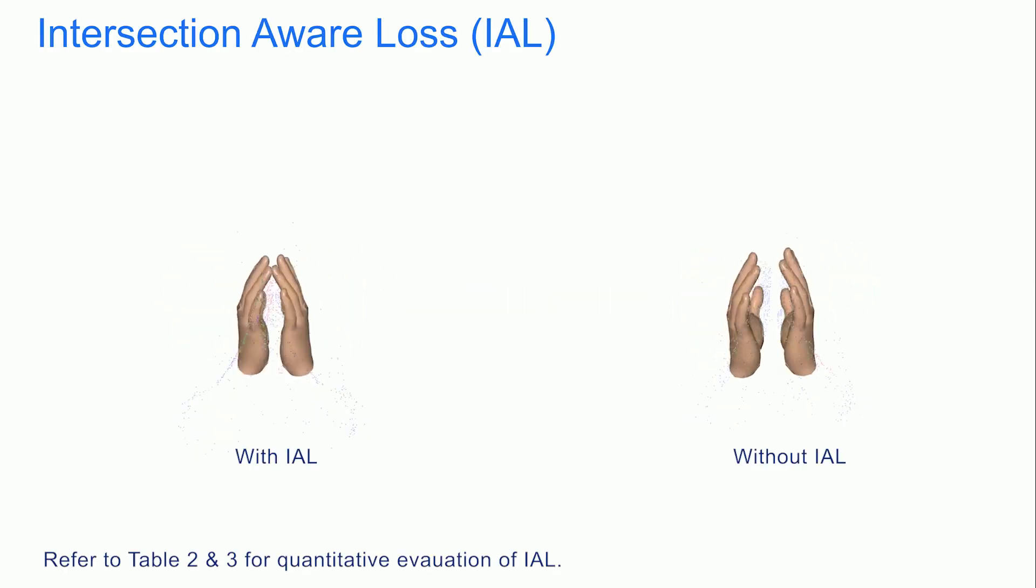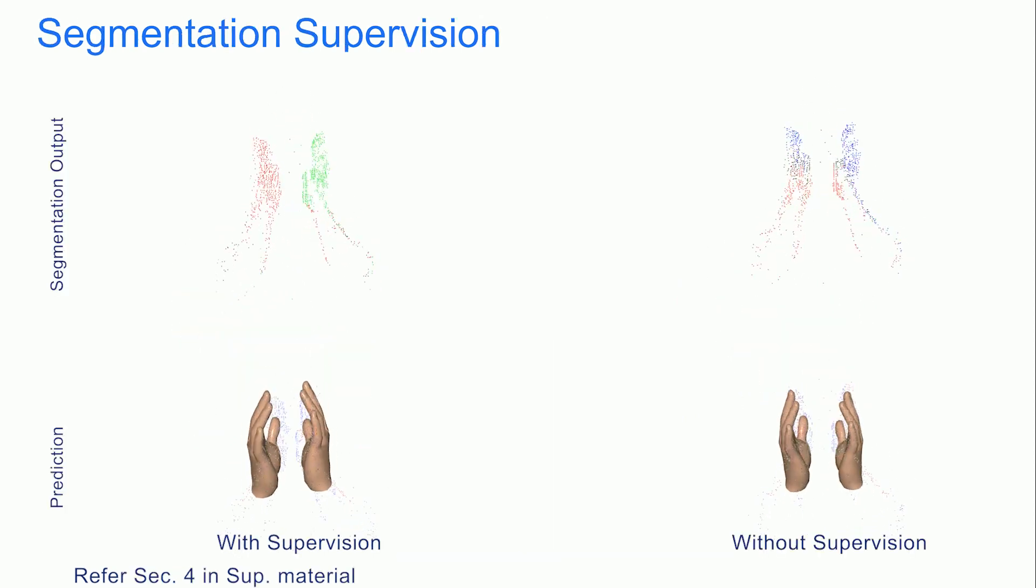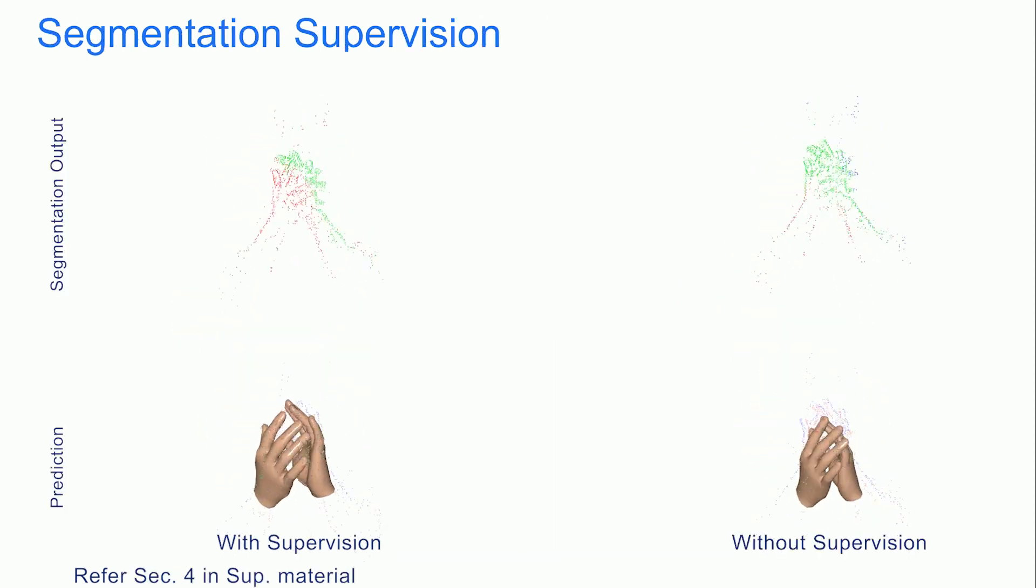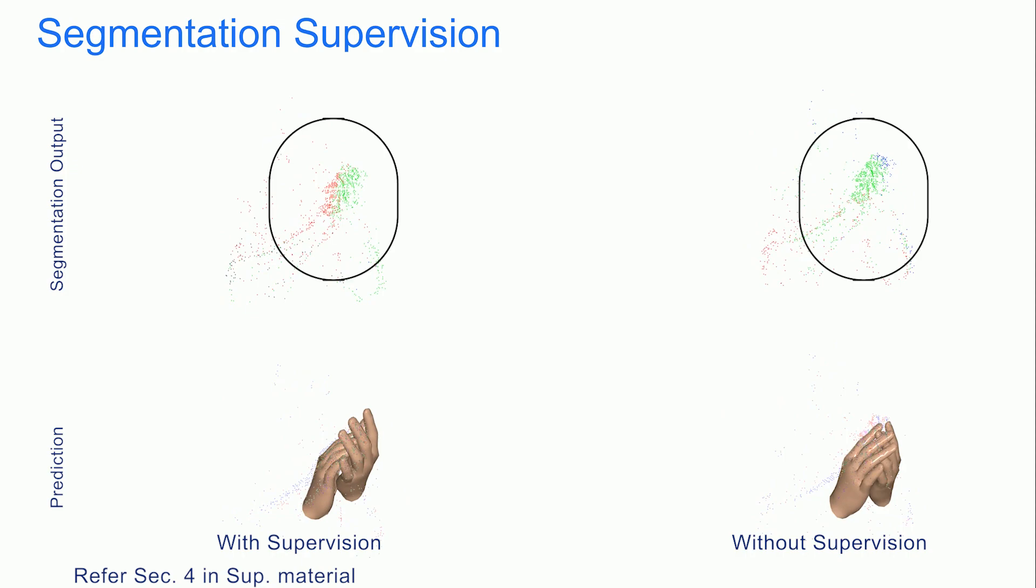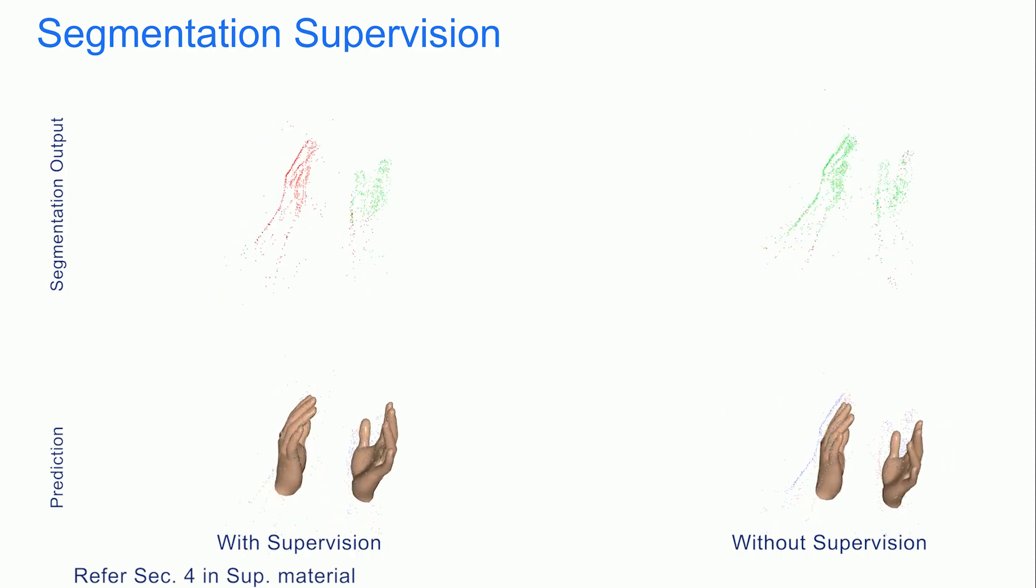We perform an ablation study to validate our design choices. Here, we observe that the intersection-aware loss mitigates the collisions between two actively interacting hands. When the segmentation branch is explicitly supervised during training, the network produces more accurate 3D reconstructions of the hands.